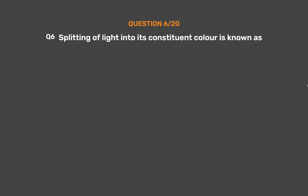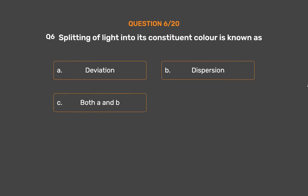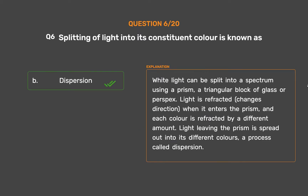Question number 6: Splitting of light into its constituent colors is known as — Option A: Deviation. Option B: Dispersion. Option C: Both A and B. Option D: None. The correct answer is Option B, Dispersion. White light can be split into a spectrum using a prism. Light is refracted when it enters the prism, and each color is refracted by a different amount, spreading out into its different colors — a process called dispersion.